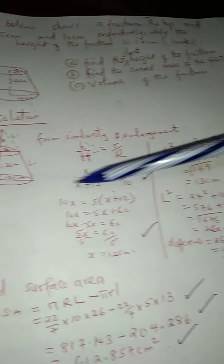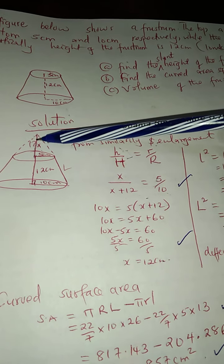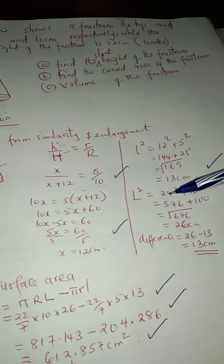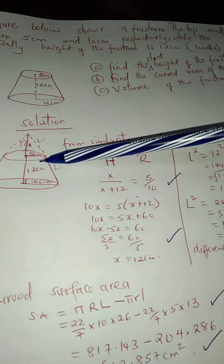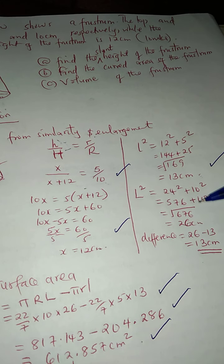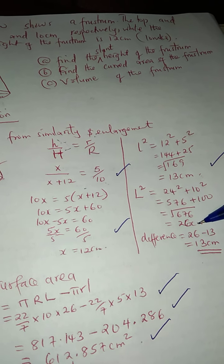Then I can get the slant length, this one here, for the whole cone. I just say 24. Where is 24? 24 is from here to this point up here. 12 plus 12, you get 24. Becomes the height. Then the base is 10 cm. So 10 cm there, you square. So you will get 676, that is 26.